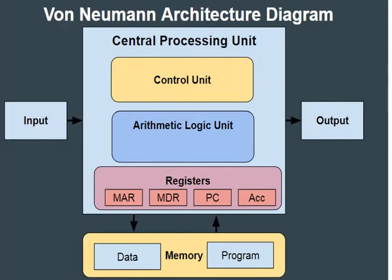Here is a more elaborated Von Neumann architecture diagram. The central processing unit contains the control unit and arithmetic logic unit. Inside the CPU we also have registers like MAR, MDR, program counter, and accumulator, which hold data and instructions temporarily. Registers are temporary storages used to hold data temporarily. In memory we have data and programs that are executed by the CPU, along with input and output units.